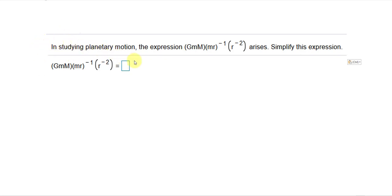In studying planetary motion, the expression GmM to the minus 1, and then r to the minus 2 power arises. Now they ask you to simplify this expression. We can use the exponential rule to try to simplify the expression.